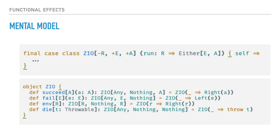This is the mental model of ZIO. There are of course more methods on the companion object - there is an effect method which takes your computation and wraps it in the ZIO. The implementation is quite intuitive: it does a regular try-catch, tries to do Right of the computation, and if it fails, does Left of the exception from the catch clause - just wrapping a try-catch with this data type.